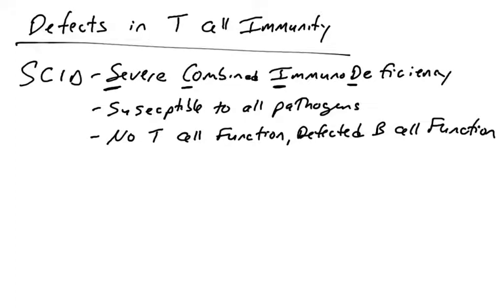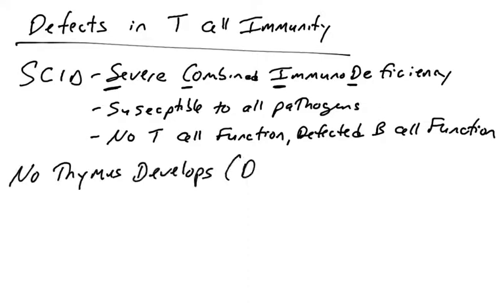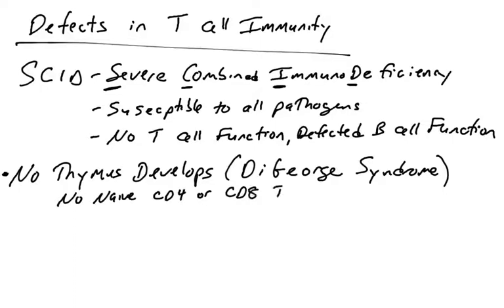There are many different causes of SCID. Some individuals, when they're born, lack a thymus — the thymus doesn't develop for some genetic or structural reason — and this is referred to as DiGeorge Syndrome. Without a thymus, there is no production of mature T cells, no CD4 cells, no CD8 cells. If you lack CD8 cells, you can't recognize virally infected cells and eliminate them. If you lack CD4 cells, you're unable to stimulate B cells in a thymus-dependent manner or activate macrophages. So that is a severe immunodeficiency.